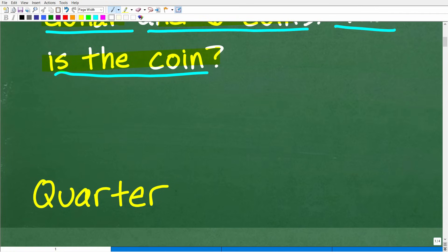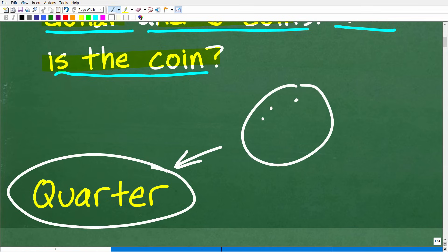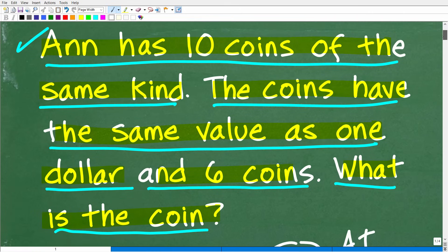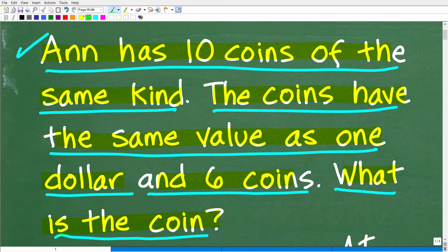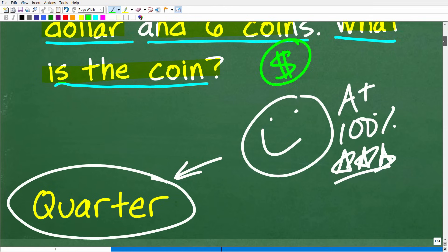The correct answer is she has a quarter. All right, so how did you do? Well, if you figured this out, that is fantastic. In my book, you definitely get a nice little happy face, an A+, a 100%, and multiple stars. So you can brag to your friends and family that, indeed, you are a certified professional expert in solving basic math word problems that involve money.